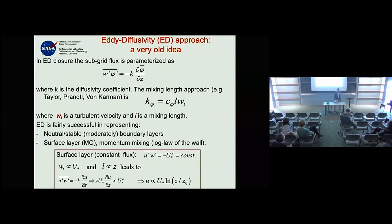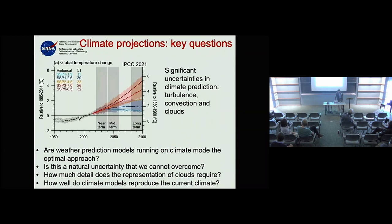Monin-Obukhov is still the surface layer boundary condition in weather and climate models. It has not been abandoned — it's the standard surface-layer description for providing the lower boundary condition to the boundary layer parameterization.